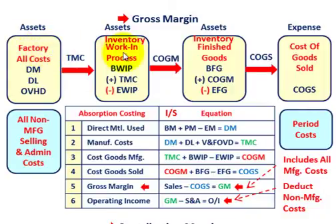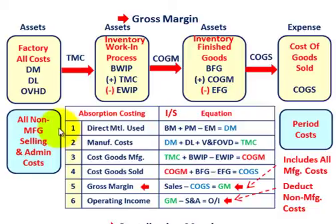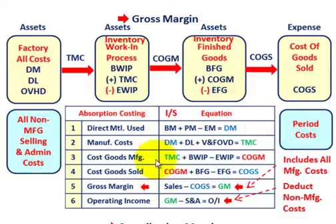We're going to be tracking these through our inventory accounts — what goes into our cost of goods sold versus what gets expensed and not included in cost of goods sold, which would be period costs. We'll also look at it in terms of our income statement to determine operating income.